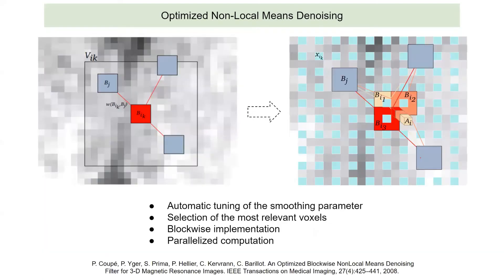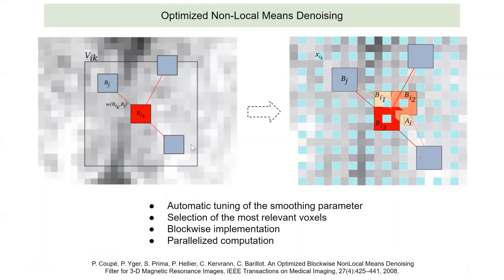This is a newer version of non-local means that has been optimized for denoising MRI data. In the paper by Pierre Coupe et al., they use T1-weighted images. Basically, they took the 2D formulation and made it a 3D formulation with additional advantages such as automatic parameter tuning and a better strategy to select similar pixels — assigning higher or lower weights to the ones you want to denoise. It has a blockwise, parallelized implementation using 3D blocks instead of 2D patches.